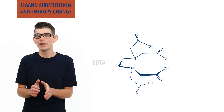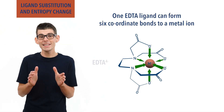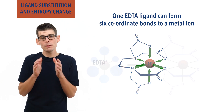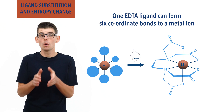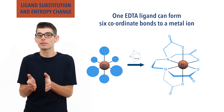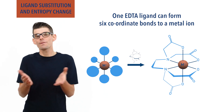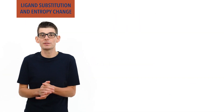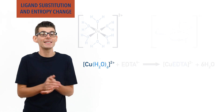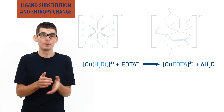Molecules of EDTA can form six coordinate bonds to a metal ion. When EDTA is substituted into a complex ion, only one EDTA molecule will bond to the metal ion, meaning all other ligands get removed and replaced with only one ligand.